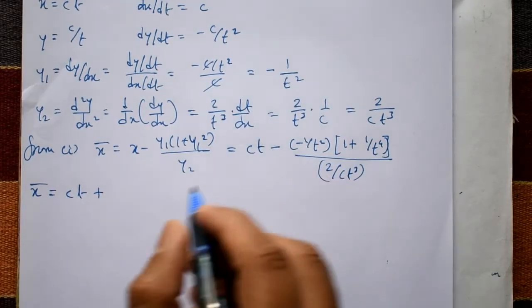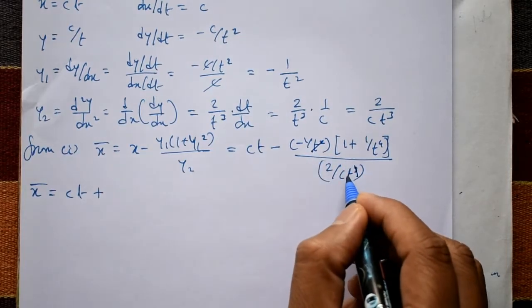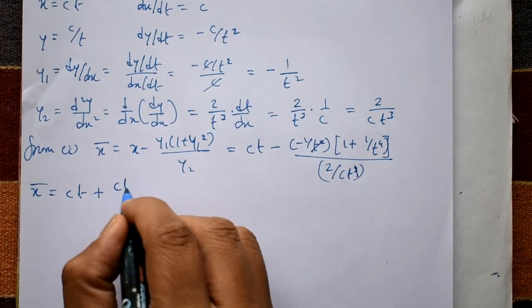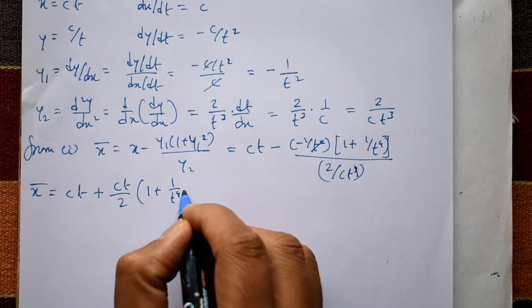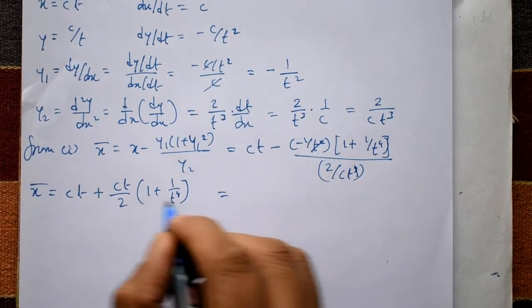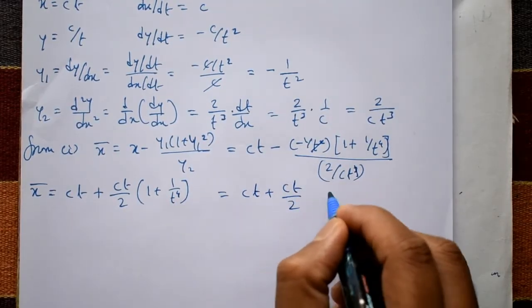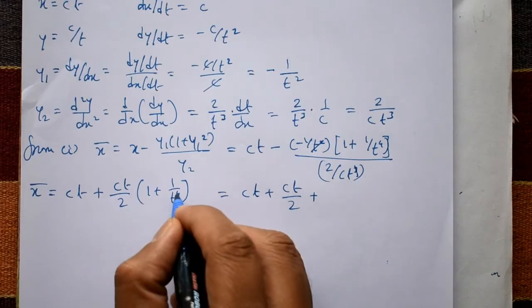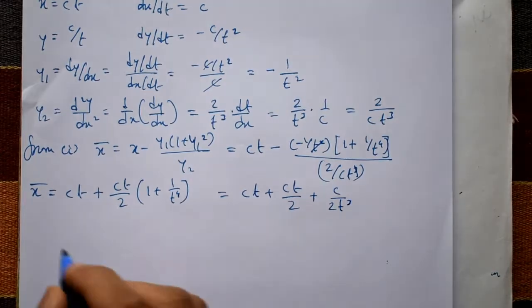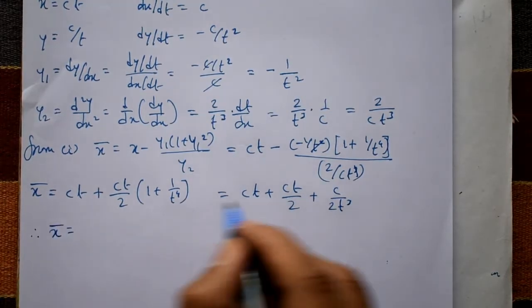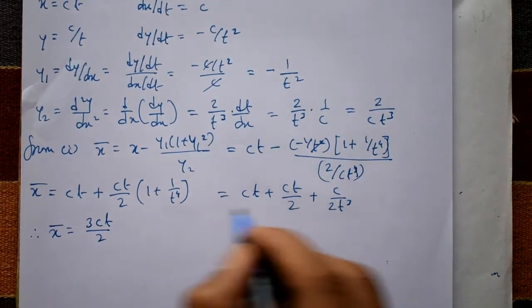Shifting terms in the numerator: t squared and t squared cancel, leaving t, giving ct divided by 2. Opening the bracket with 1 plus 1 by t to the power 4, we get ct plus ct by 2 plus c by 2t cubed. Taking LCM, therefore x-bar equals 3ct by 2 plus c by 2t cubed.